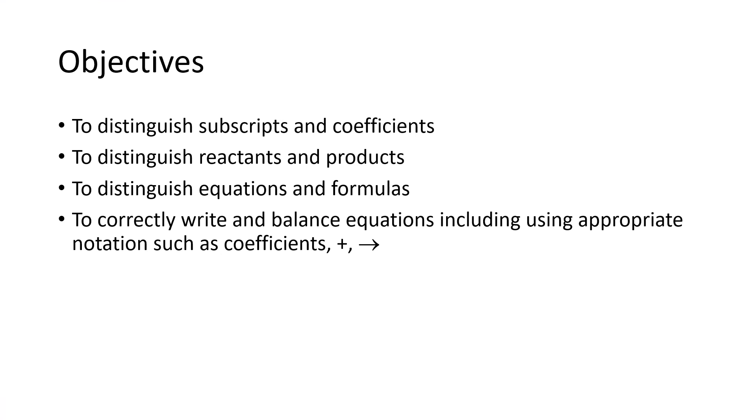So our objectives were to distinguish subscripts from coefficients. So subscripts are the little numbers that describe one element. Coefficients are the big numbers out in front for a whole substance. Reactants are the things you mix together and they come before the arrow. Products are the things that are made by the reaction and they come after the arrow. A formula describes one substance in an equation and the equation describes the overall chemical reaction. And we looked at a process for balancing, which we will do several examples in the next lecture. And we also talked about the notation equation for writing equations, including the plus and the arrow, the yield sign.